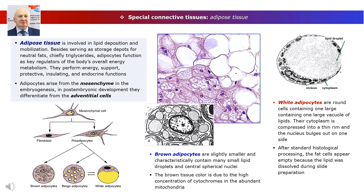After studying the structure and function of fibrous connective tissues, let's look at the properties of special connective tissues: adipose, reticular, and mucous tissues. An active tissue in which fat-storing cells or adipocytes predominate is called adipose tissue. These large cells are typically found isolated or in small groups within loose or dense irregular connective tissue, but occur in large aggregates in many organs and body regions. Adipose tissue normally represents from 15 to 20% of body weight in men, somewhat more in women.